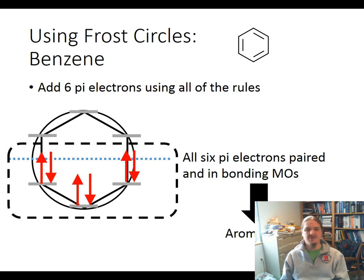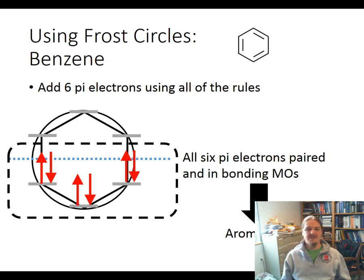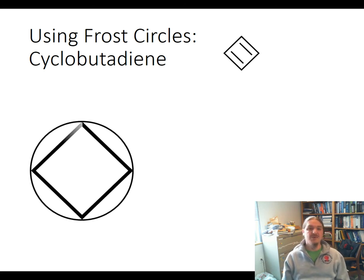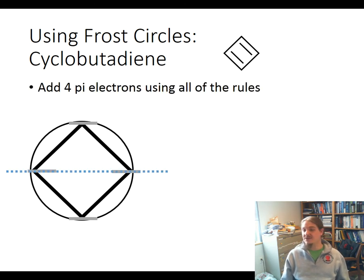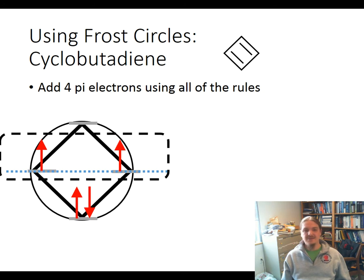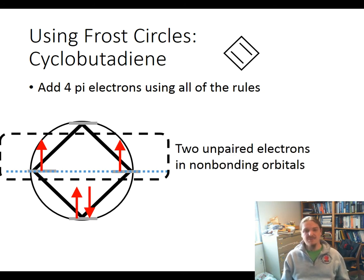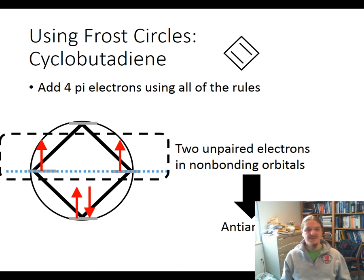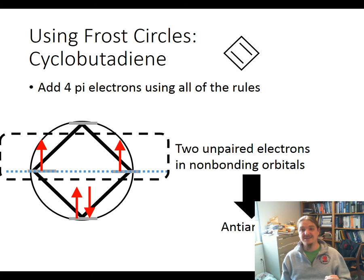This arrangement — all 6 electrons paired and in bonding molecular orbitals — is a recipe for aromaticity. Generally, if you have sets of paired orbitals in only bonding molecular orbitals, you have an aromatic system. If you have unpaired electrons in non-bonding or anti-bonding orbitals, you have a recipe for anti-aromaticity, as we see with cyclobutadiene. Cyclobutadiene has 4 electrons based on its 2 pi bonds. Filling those in, we get 2 electrons that are unpaired and in non-bonding orbitals. This molecular orbital diagram suggests cyclobutadiene only has one real pi bond — the second pi bond is effectively imaginary, with those electrons in non-bonding orbitals.